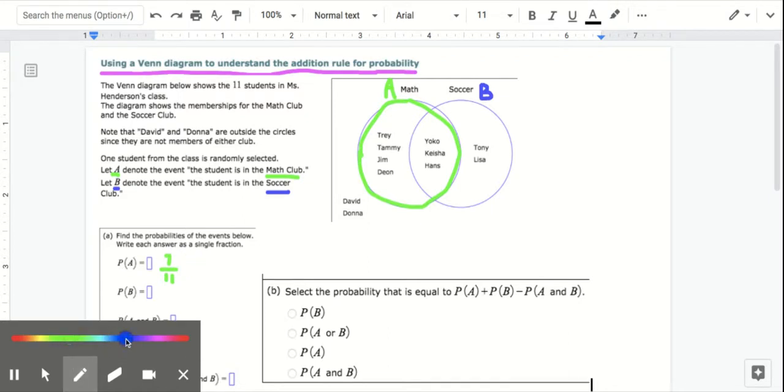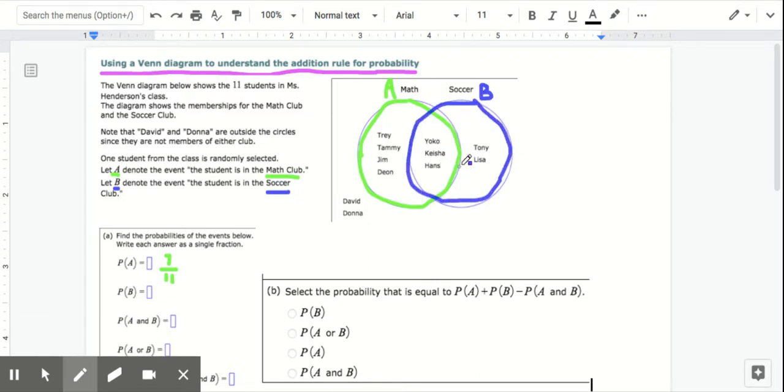What's the probability that they're in the soccer club, the probability of B? Well there's 3 in the middle and 2 on the side, so 1, 2, 3, 4, 5 elevenths. There's a 5 out of 11 chance that if you randomly select a student, they will be in the soccer club.